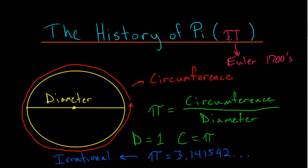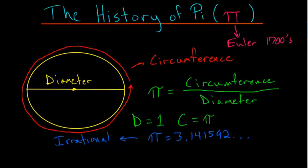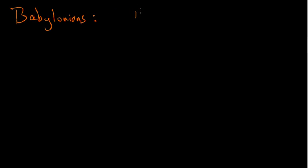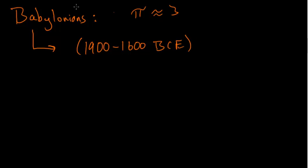But the history of pi starts way back with the Babylonians. The Babylonians had an ancient value for pi of 3, but we were able to find a clay tablet dated between 1900 and 1600 BCE, where the Babylonians used a value of pi that was 3 and 1 eighth, which as a decimal is 3.125.